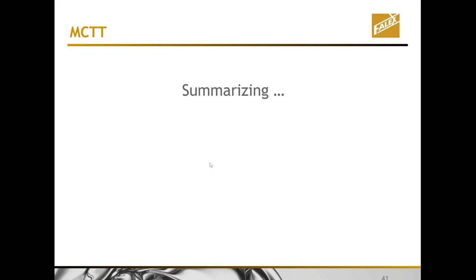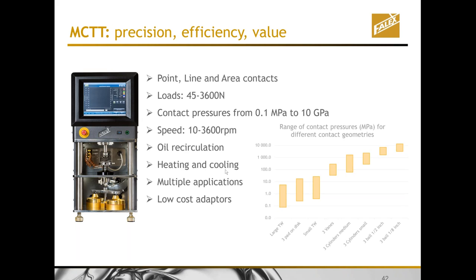Those were several examples of different groups of contacts. I hope it gives you some inspiration. I'll hand back to Mike Anderson to summarize. Thanks, Dirk. That was amazing — and that's just a small amount of the capabilities this machine can do. To summarize: point, line, and area contacts; the machine can run in unidirectional as well as reciprocating motion; contact pressure, speeds, oil recirculation — it's a very versatile test machine.